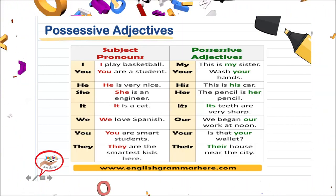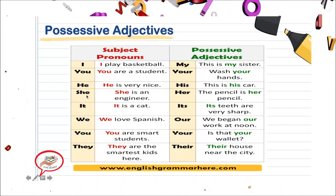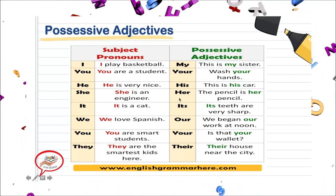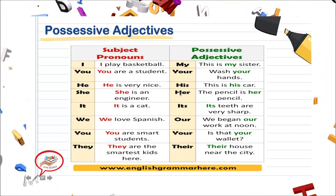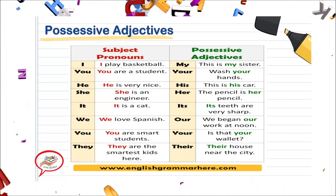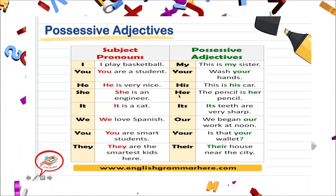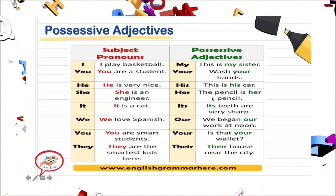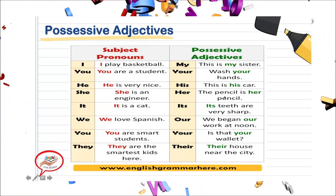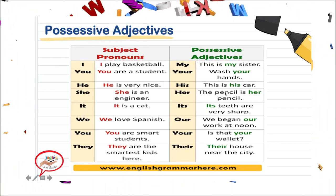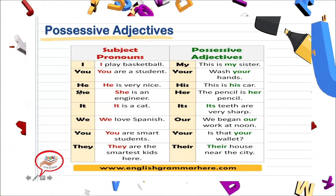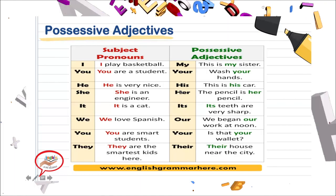Let's see the other one. Tenemos she. Nuestro possessive adjective para she va a ser her. La H, recordemos que en español la H es muda, pero en inglés sí se va a sonar. Entonces her — como que tengamos una jota. The pencil is her pencil. El lápiz es su lápiz. Entonces, tenemos she, nuestro possessive adjective va a ser her.